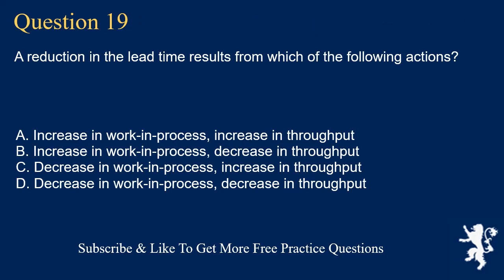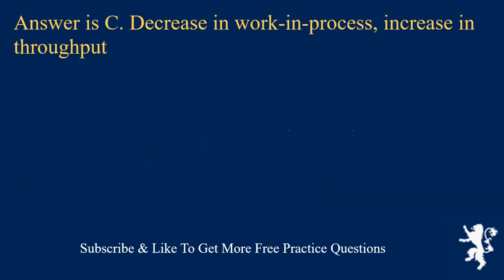Question 19. A reduction in the lead time results from which of the following actions? A. Increase in work in process, increase in throughput. B. Increase in work in process, decrease in throughput. C. Decrease in work in process, increase in throughput. D. Decrease in work in process, decrease in throughput. Answer is C. Decrease in work in process, increase in throughput.